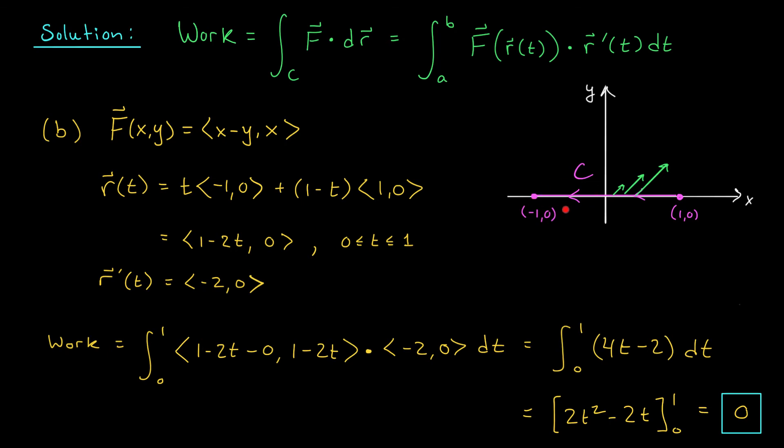But on this part of the x-axis, my force vectors look like <-1/3, -1/3>, and <-1/2, -1/2>. They're pointing this way. So the negative work done on this part of the path is canceling the positive work done on this part of the path. We get a total work of 0.